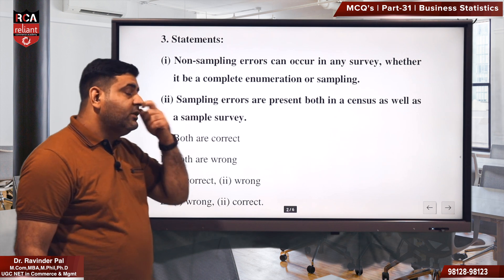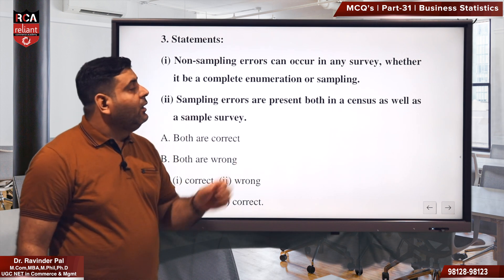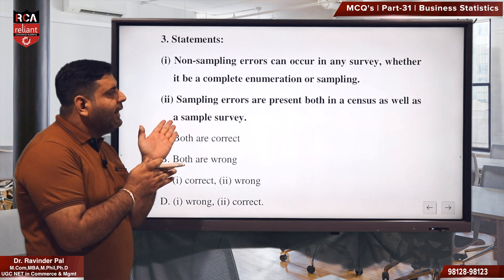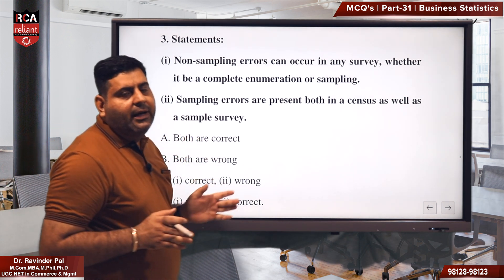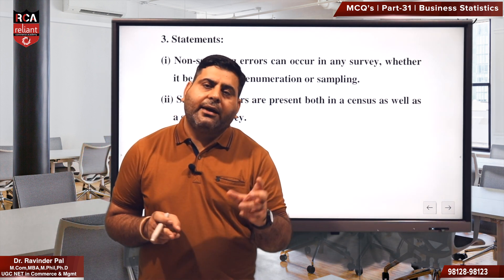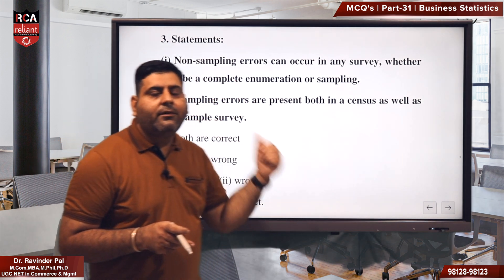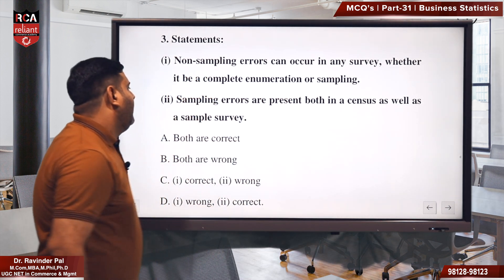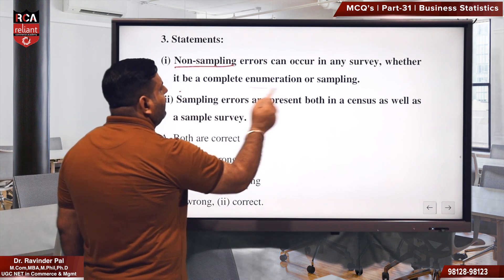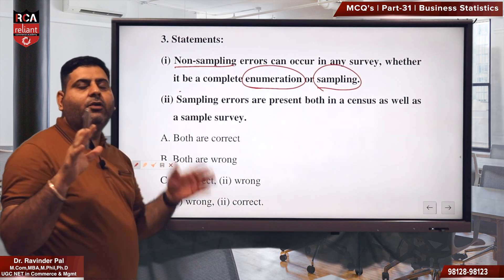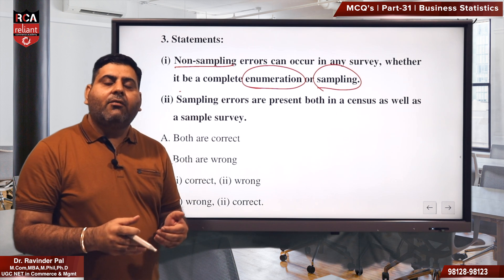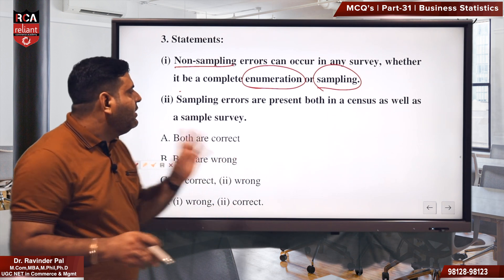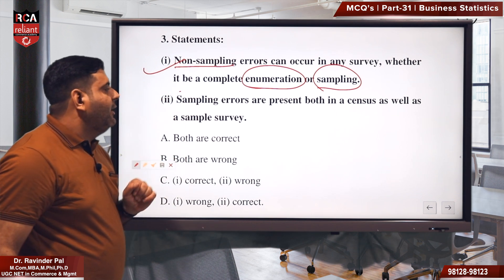Third question: two statements are given and you have to identify which is right and which is wrong. Statement one says: it is a non-sampling error that can occur in any survey, whether it be complete enumeration or sampling. There are two types of errors — sampling error and non-sampling error. Non-sampling error can occur everywhere, whether you take a sample or do a complete enumeration, meaning covering 100% of the population. So this statement is absolutely correct.